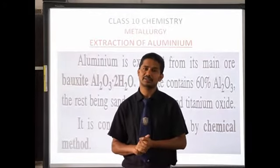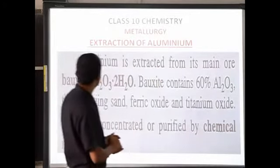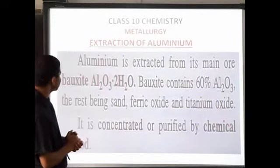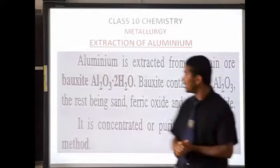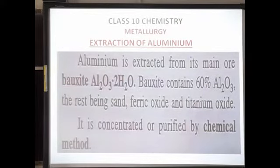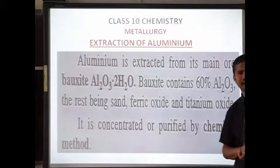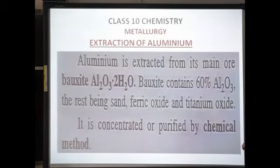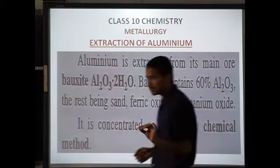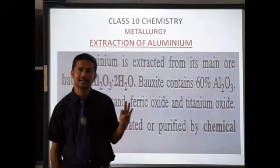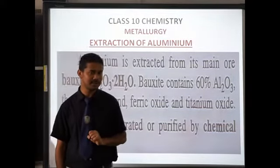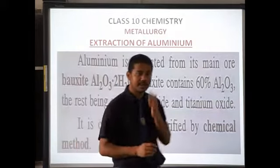In the second step, concentration of ore, aluminium is extracted from bauxite. The chemical formula of bauxite is Al₂O₃·2H₂O. Bauxite contains 60 percent aluminium oxide, and the impurities associated with it are sand, ferric oxide, and titanium oxide.